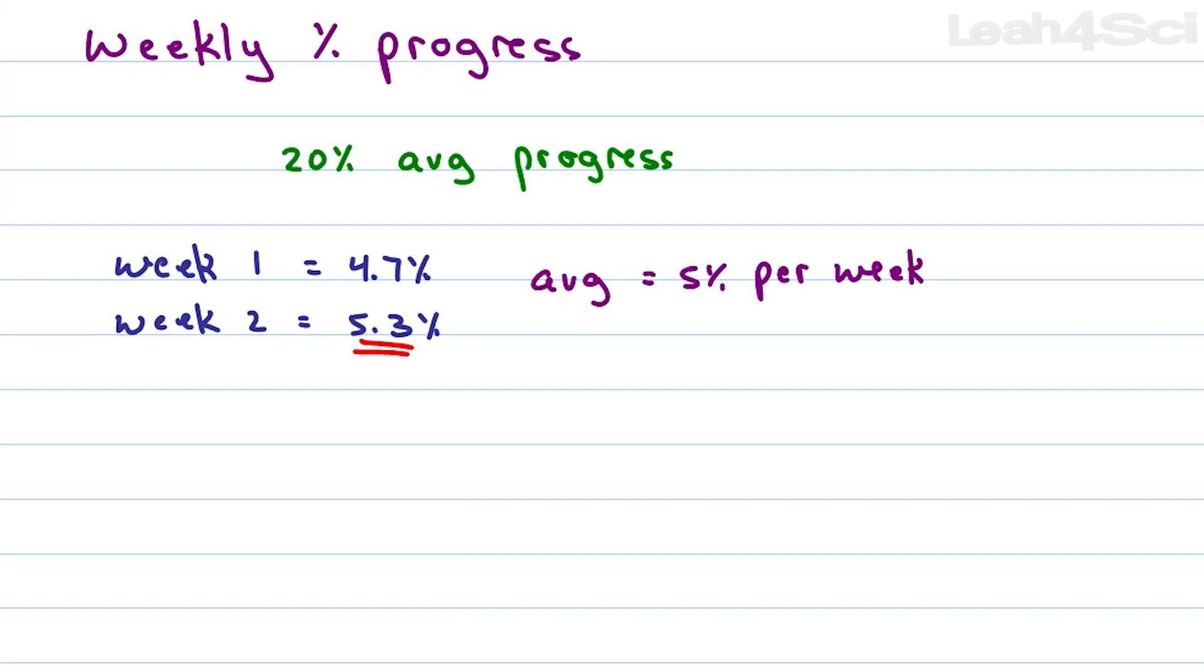So first, how much do we still have to do? Well, we had 20% average from evaluating what you've already done. We added another 4.7 and 5.3 for 10% in the two weeks that we were evaluating. That means right now you're sitting at 30% total progress with an average expected increase of 5% per week. 100% representing completion of all of the sciences minus the 30% that you've already done tells us that you have 70% to go.